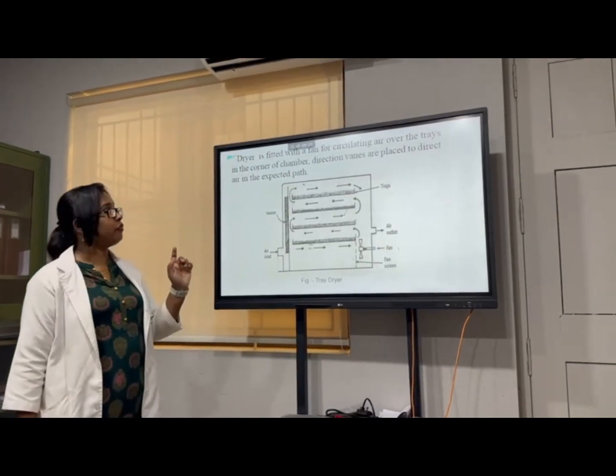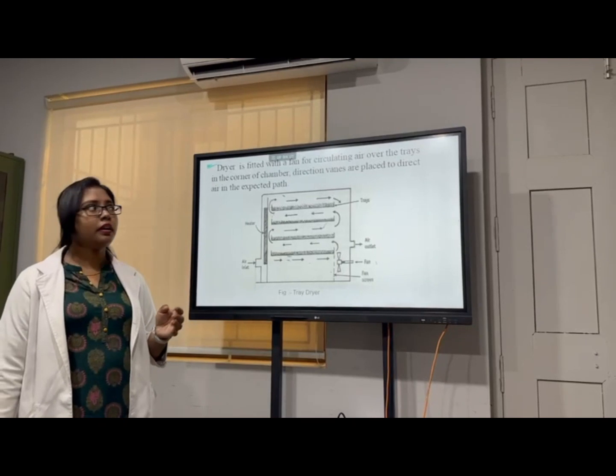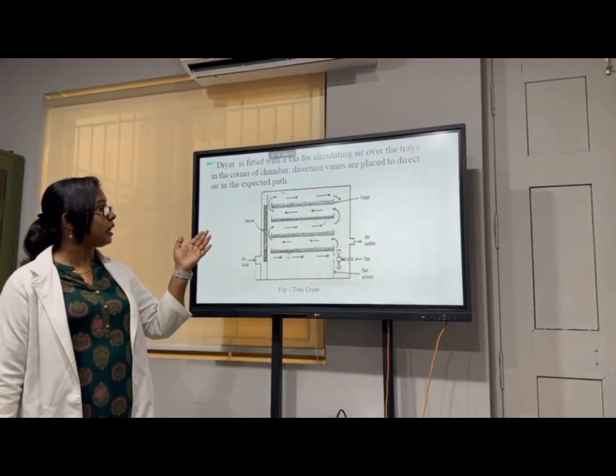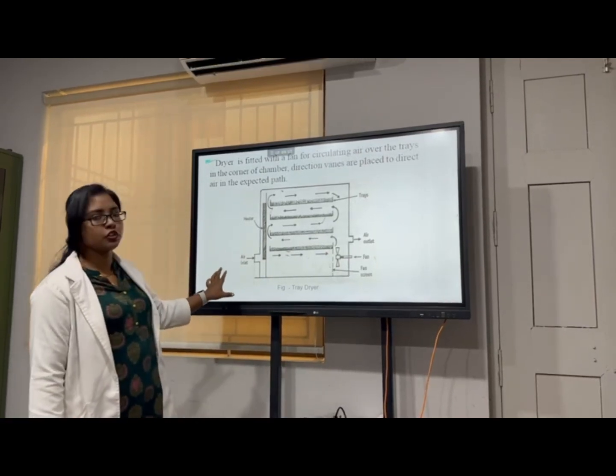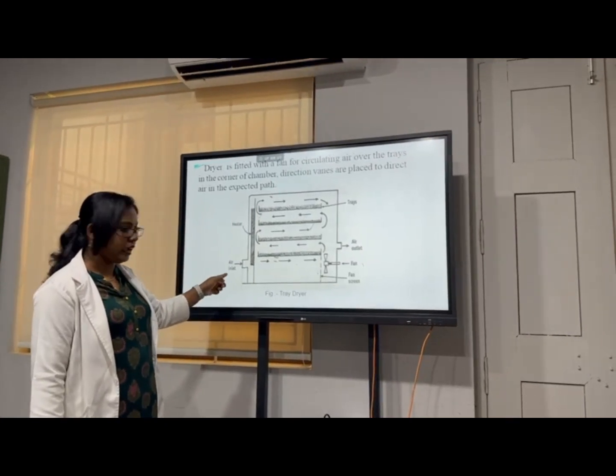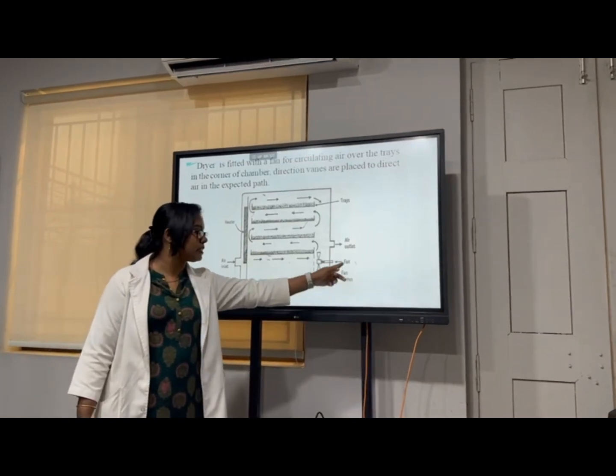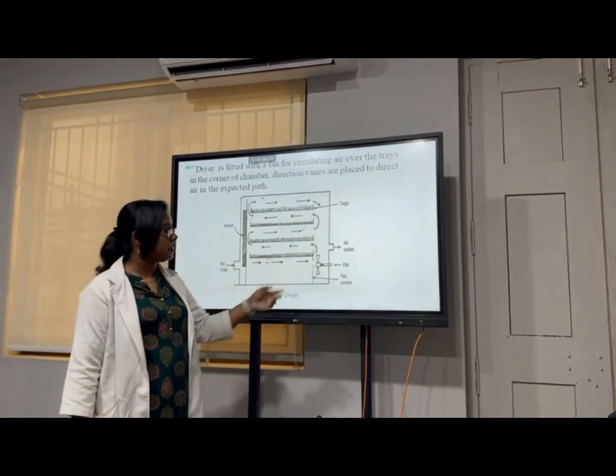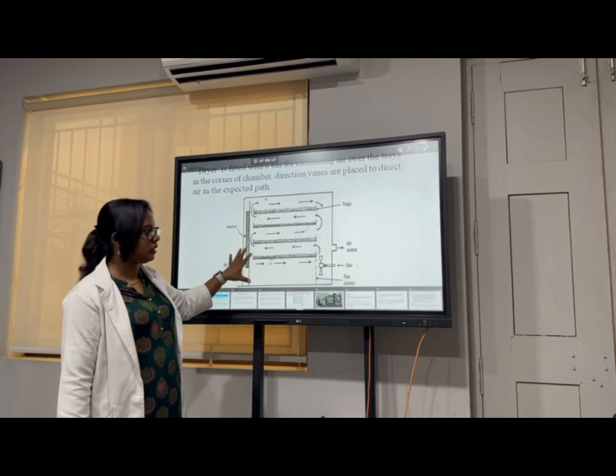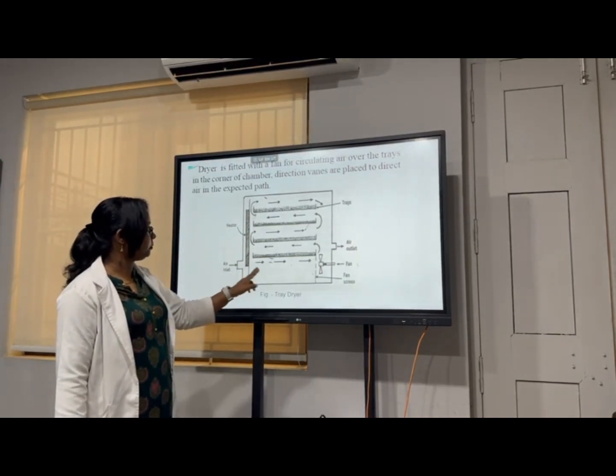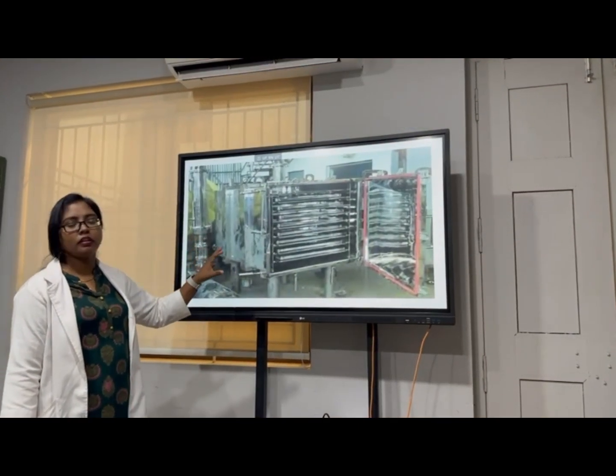The dryer fitted on a fan for the circulating air over the trays and the corner of the chamber. The direction of baffles are placed and varied in the expected path. So here, this is the schematic of the tray dryer. Here, the air inlet and then heater, then the tray is placed with the air outlet and then so many trays. This is laboratory scale. Four trays is here. This is the industry-level tray dryer.